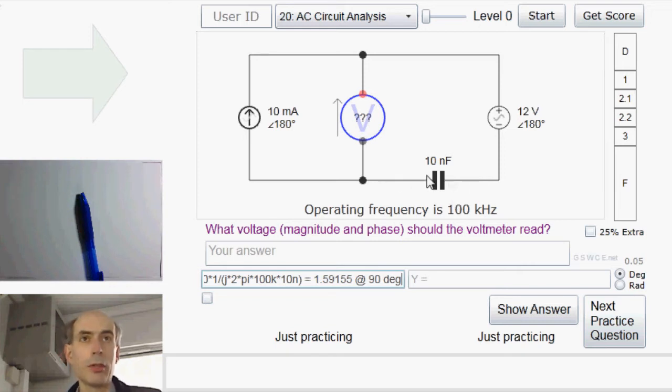And since the current is flowing this way, this will be the higher potential, this will be the lower potential. So, the voltage between here and here will be 1.59 at 90 degrees, the voltage from here to here, plus 12 volts at 180 degrees.